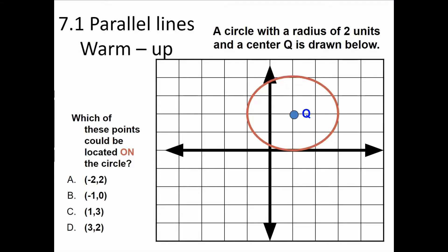A circle with a radius of two units and a center Q is drawn. Which of these points could be located on the circle? Let's start with (-2, 2). Starting at the origin, negative 2 tells me to go to the left 2 on the x-axis and up 2 on the y. That does not hit my circle on the edge, therefore A is not the answer.